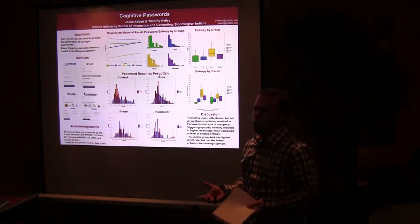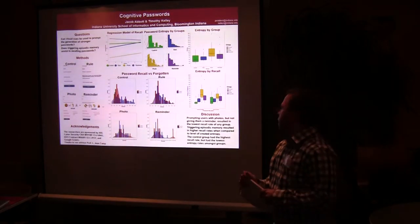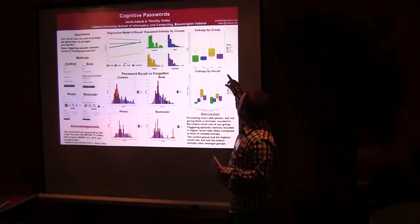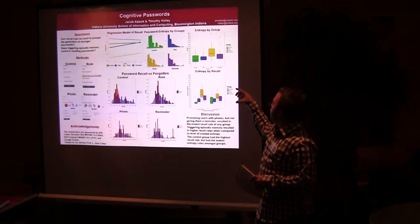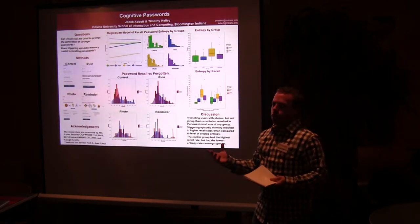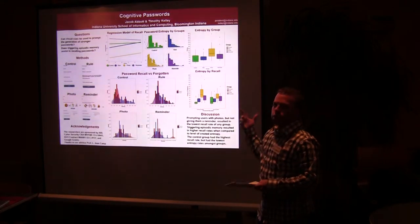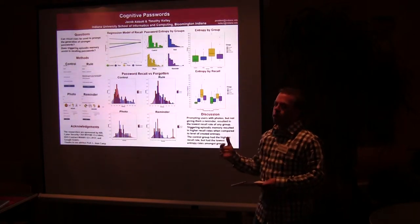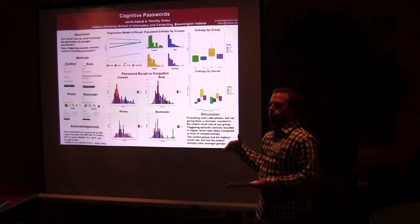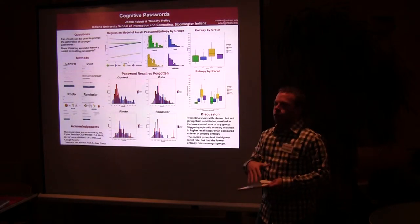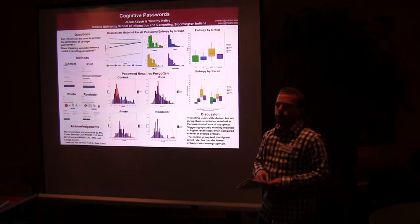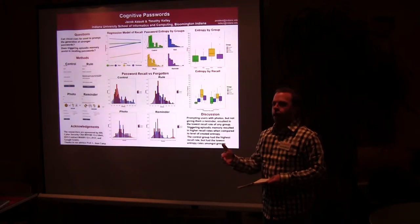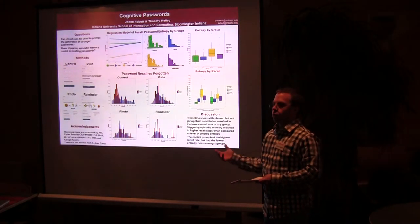So what we showed so far with the results that we've looked at is that you can see through the entropy by group here that the control group as a whole didn't have very strong entropy settings. The characteristics that we found, their median was just barely over the minimum that the other groups had. So doing analysis on the characters used in the passwords that we received, the control group, only less than a third of them actually had passwords that would meet the requirements for the other three groups.